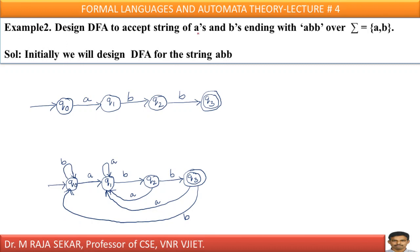Design a DFA to accept strings of As and Bs that end with ABB. ABB is the simplest possible string — A, then B, then B — and it must reach the final state. If we feed B on Q0, it must remain there because we need the string ABB. On Q1, if we get A, since we need the ending ABB, any number of As keeps the machine in the same state, so we add a self-loop.